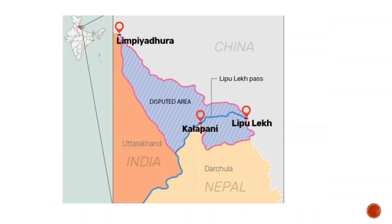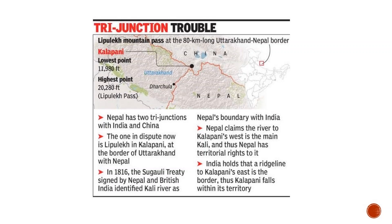Very recently, India inaugurated the Adi Kailash Lipulekh Pass road cutting across the disputed Kalapani area. The road is used by Indian pilgrims to Kailash Mansarovar. The Kalapani region derives its name from the river Kali. Nepal's claim to the region is based on this river, which became the marker of the boundary of the Kingdom of Nepal following the Treaty of Sugauli.